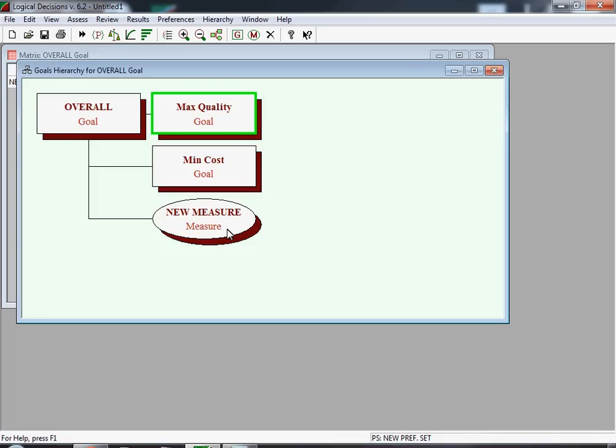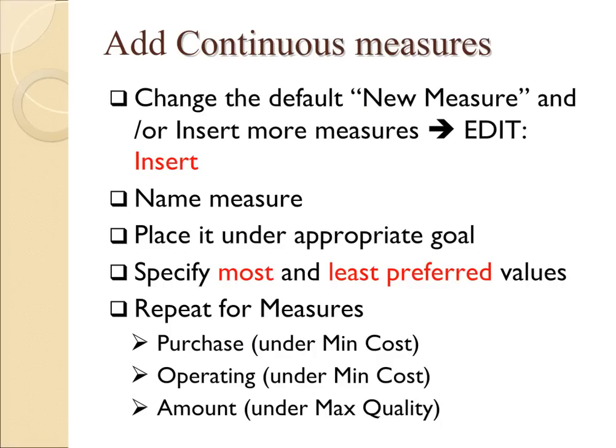Now we're going to work on the measures. We will be adding the measure 'Purchase Cost' under Minimize Cost, but since there is a default measure already, we can simply edit the measure labeled 'New Measure' and change it. Later, we will also show you how to use the Insert command.